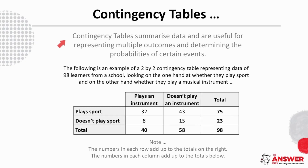Contingency tables summarize data and are useful for representing multiple outcomes and determining the probabilities of certain events. This is a 2x2 contingency table and it represents the data of 98 learners from a school regarding the playing of sport and the playing of a musical instrument.